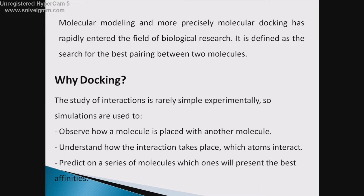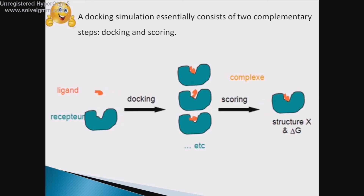Simulations help understand how the interaction takes place, which atoms interact, and predict on a series of molecules which one will present the best binding abilities. A docking simulation essentially consists of two complementary steps: docking and scoring. Docking consists of placing the ligand in the active site of the protein and sampling possible conformations. Scoring consists of evaluating the affinity between the ligand and the protein and giving a score to the position obtained during the docking phase.